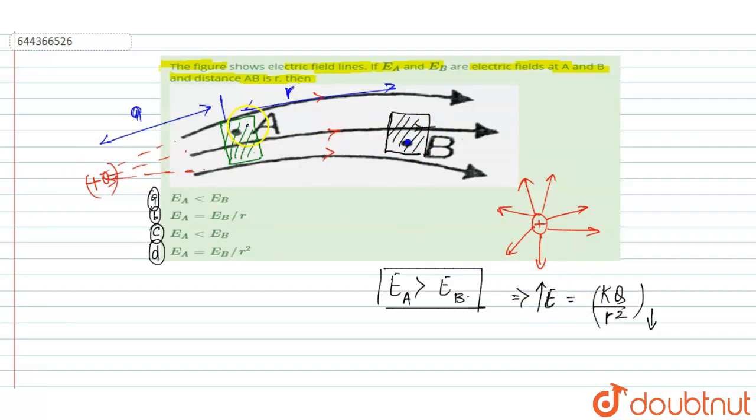That means electric field is greater at point A with respect to B. That means option A, EA is greater than EB. Option A is the right answer of this question. Thank you.